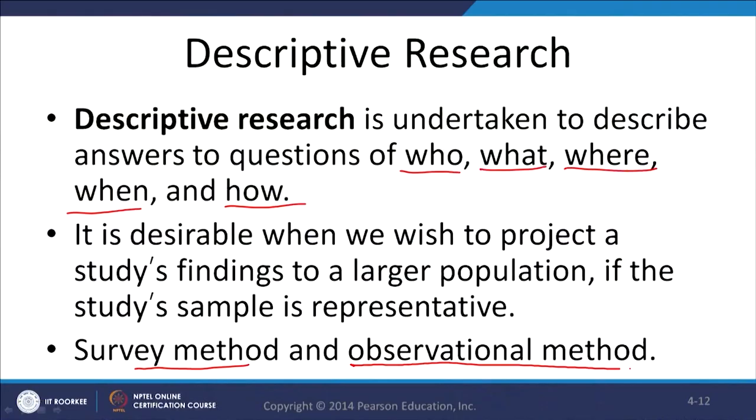The second method is the observational method. Observation can sometimes tell you more than a survey because when you use the observational method, you observe the customer in a space where he is free and behaving naturally. During a survey, the respondent becomes a little more attentive and vigilant. But with an observational method, you observe them in a space and time where they are behaving as their natural self, making it very useful.